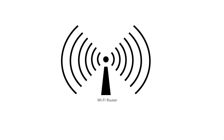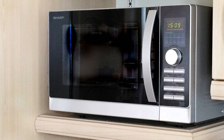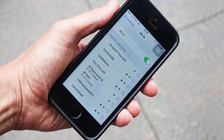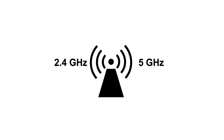Fourth, interference can be an issue, so keep the router away from sources of interference. Microwave ovens are particularly bad, and if there are lots of other routers around this could be a problem as well. Make sure you have a dual band router because most phones and laptops these days have a dual band capability. The most popular band is 2.4GHz and this only really has a choice of three channels, but 5GHz has many more.